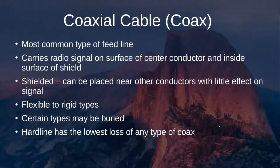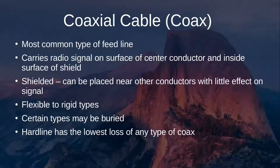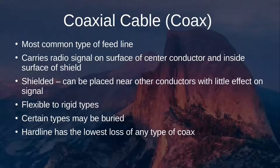Coaxial cable carries a radio signal on the surface of the center conductor and inside the surface of the shielded conductor. The shielding allows coaxial cable to be placed near other conductors, such as a metal pole, with little effect on the signal. There are flexible and rigid types — rigid types are known as heliax. Certain types may be directly buried, or you can pass cable through a conduit. Direct burial coaxial cable must be specifically rated for that use.